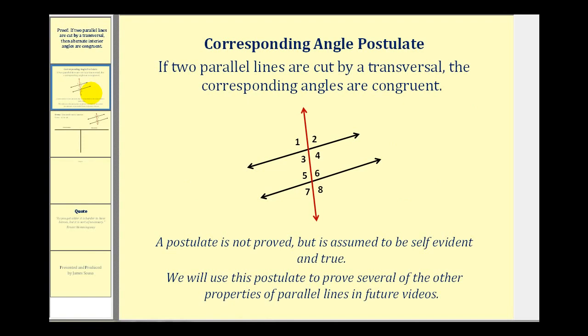This is usually one of the first proofs after the corresponding angle postulate has been given. Remember, this postulate tells us that if two parallel lines are cut by a transversal, the corresponding angles are congruent. A postulate is not proved; it is assumed to be true. So we can use this to prove the given theorem.